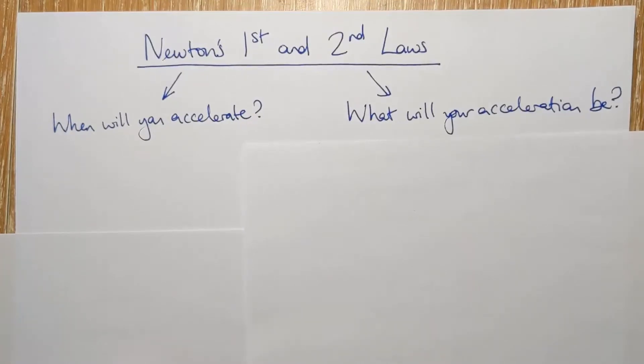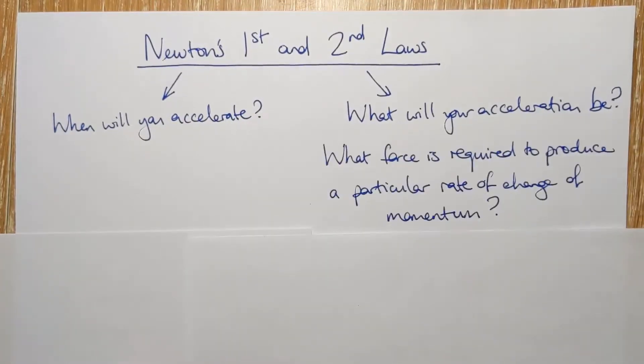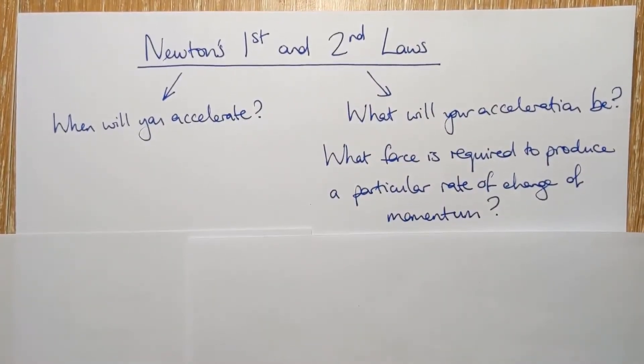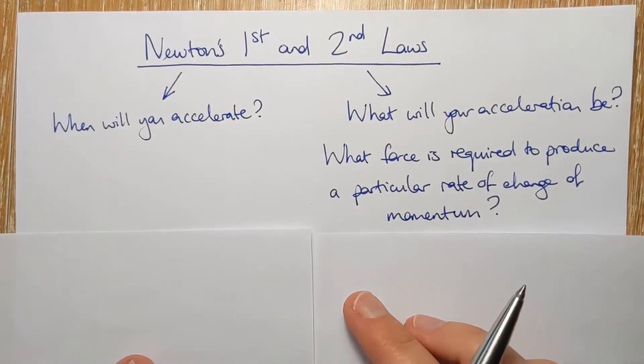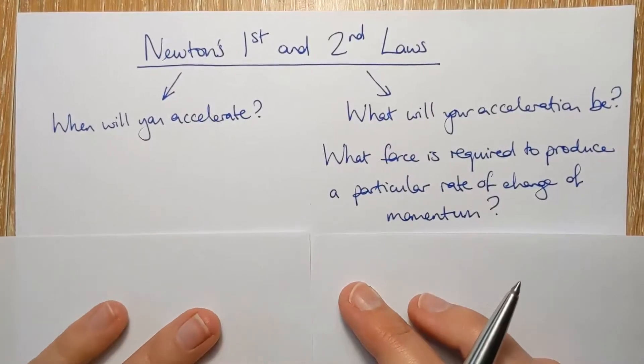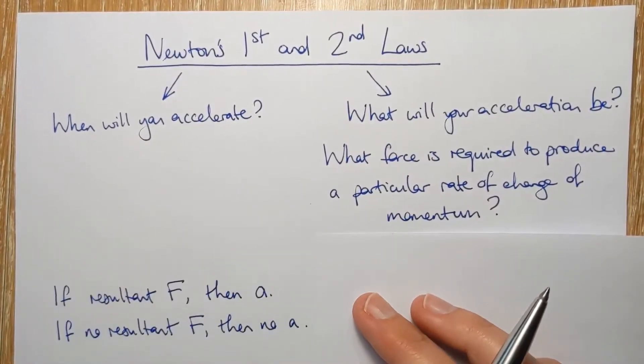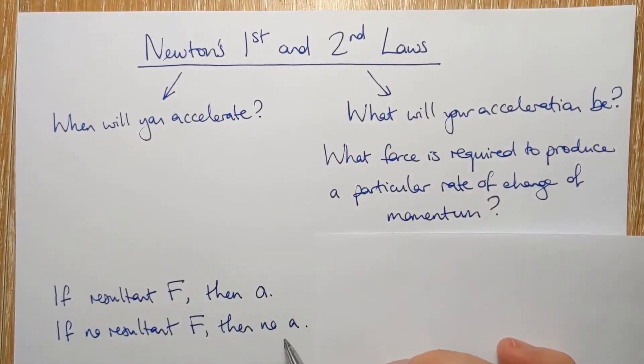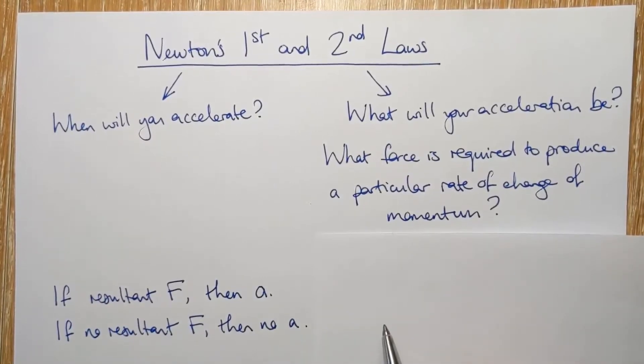More fully, the second law is answering this question: What force is required to produce a particular rate of change of momentum? So on the first question, the first law tells us that you will accelerate if there is a resultant force on you. And if there is no resultant force on you, then you won't accelerate. Simple as that.